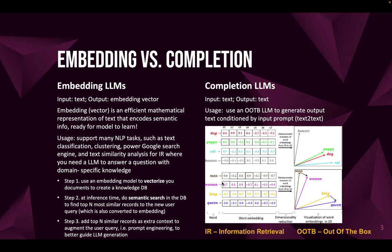For completion large language models, it is straightforward — it is text-to-text generation: the input is text and the output is also text. Basically, you use the large model's autoregressive capability to generate output text conditioned on the input prompt. Here is an illustrative demonstration of the concept of text embedding.